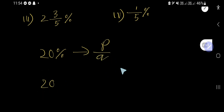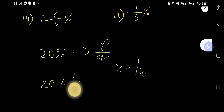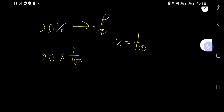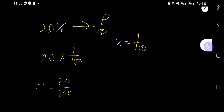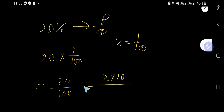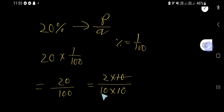Remember, percent means 1 over 100. So multiply 20 by 1 over 100, giving us 20 divided by 100. Now we need to reduce. Rewrite 20 as 2 times 10, and rewrite 100 as 10 times 10. Cancel one factor of 10, leaving 2 over 10.